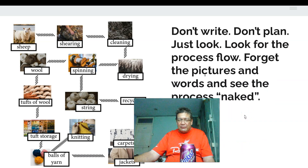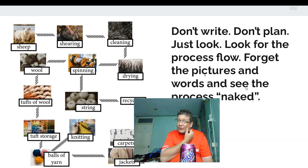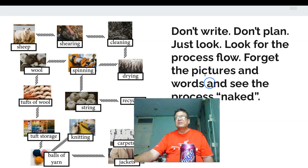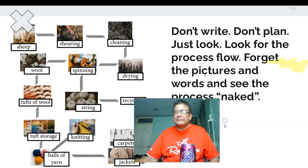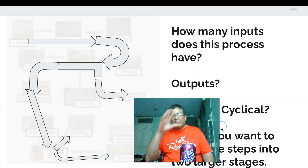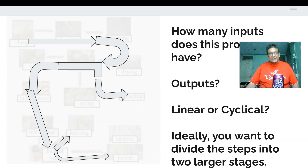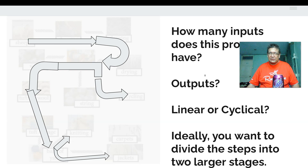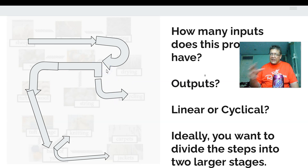When I get a process diagram, the thing to do is — don't write yet, just plan. Look for the process flow: how does stuff move around? Forget the pictures and the words and just see the process as naked as you can make it. See it as a series of lines — where do the lines go? Ask yourself some basic questions. Hats off to Chris Pell, from whom I'm taking this approach: how many inputs and outputs do we have? What goes in?